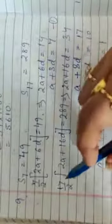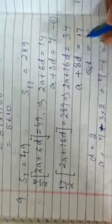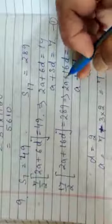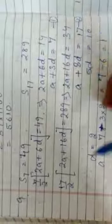Similarly, second is 17 by 2 into 2A plus 16D equals 289. This gives 2A plus 16D equals 34, so A plus 8D equals 17. Now with elimination method, A plus 3D equals 7 and A plus 8D equals 17. Solve these equations yourself. You will get 5D equals 10 and D equals 2.